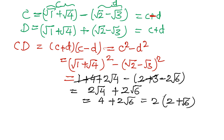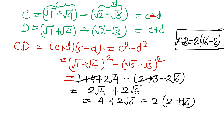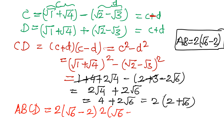What was our AB? It was 2 times the quantity root 6 minus 2. Now let us consider the complete product of ABCD. ABCD equals AB which was 2 times root 6 minus 2, and CD is 2 times root 6 plus 2. Take the product of 2 and 2, and then root 6 minus 2 times root 6 plus 2.